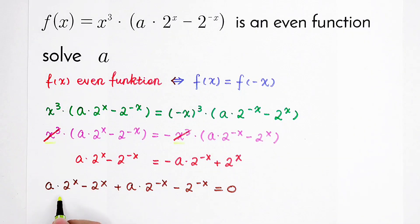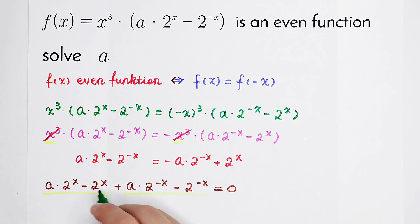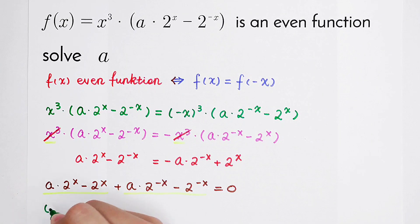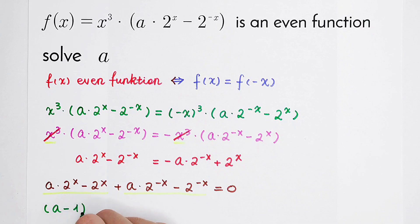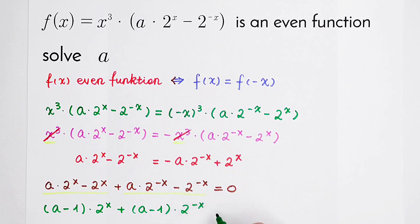Now we can factorize it. We get a minus 1, times 2 to the power x, plus a minus 1 times 2 to the power minus x, is equal to zero.